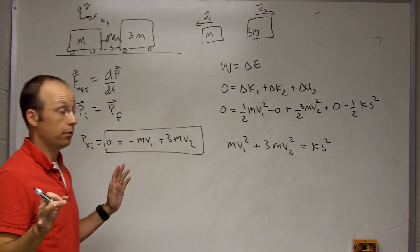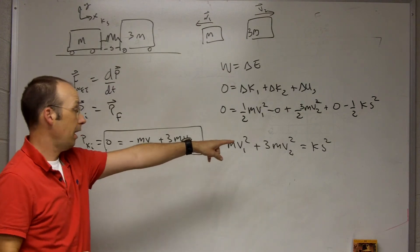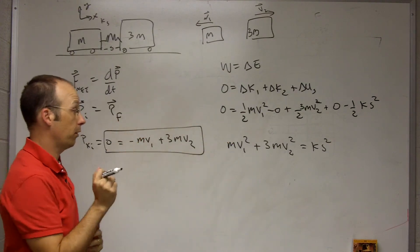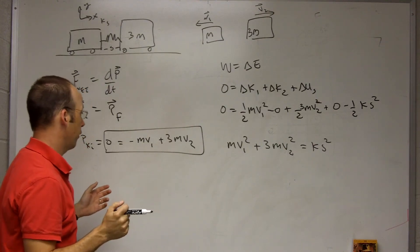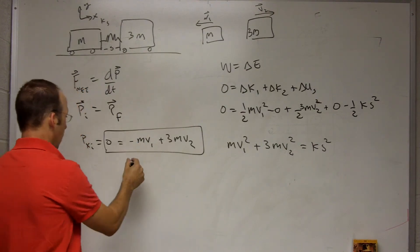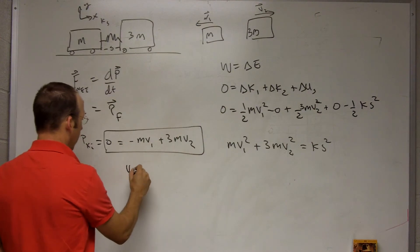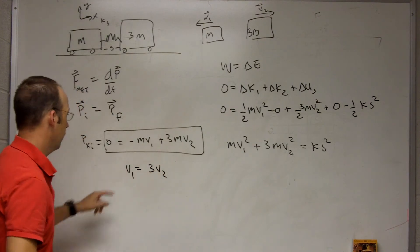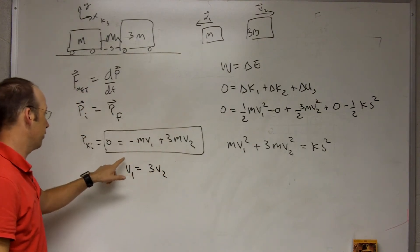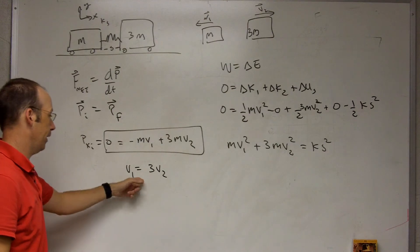So now I have two equations, two unknowns. I have that equation. K and S are values that we're given, so they're not really variables. And we're not trying to solve them. Let me just solve this one. V1 equals 3V2. If I add MV1 to both sides and divide both sides by M, I get that.